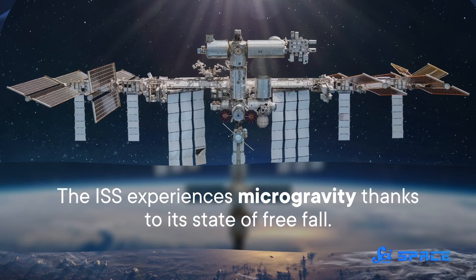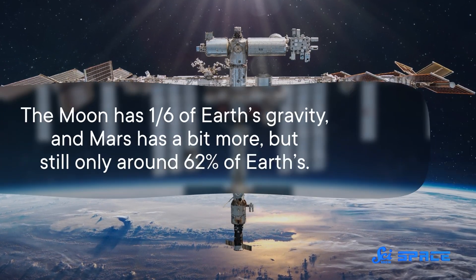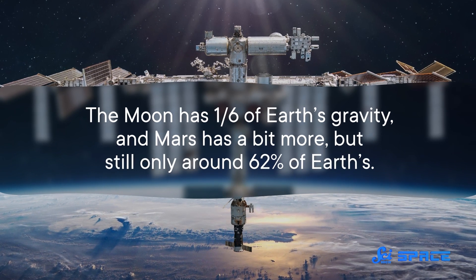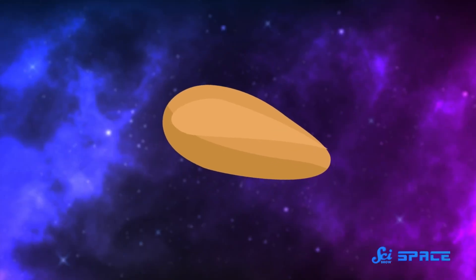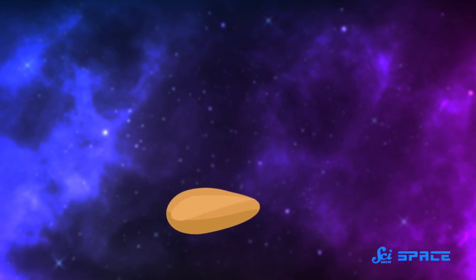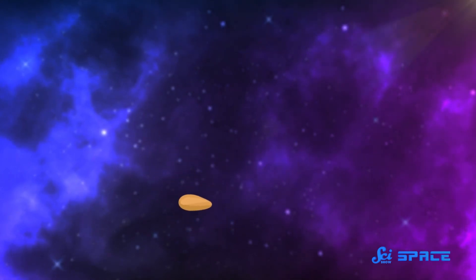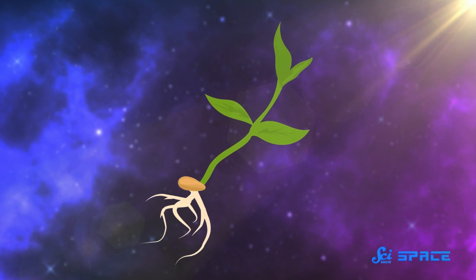All of those growing experiments have been really important, because they've told scientists a lot about how plants grow in the conditions of space. Take something like gravity, for example. The ISS experiences microgravity thanks to its state of freefall. The Moon has one-sixth of Earth's gravity, and Mars has a bit more, but still only around 62% of Earth's. So one of the first things researchers wanted to find out is whether plant roots still grow down when they don't have the cue of gravity to guide them. Turns out, plants seem to do just fine using strong light as a guide instead, with shoots growing up towards the light and roots away from it.